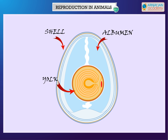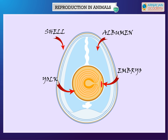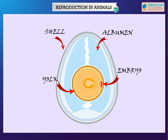The yolk contains fats, minerals and vitamins. Embryo — the growing baby inside the egg is called embryo. It obtains food from the yolk. It is a tiny red spot in the yolk.